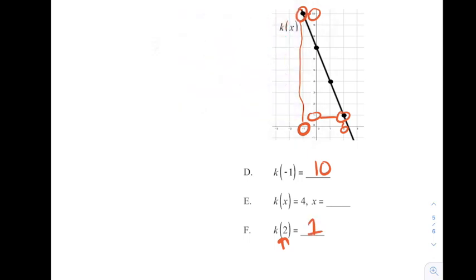Now part E looks a little different. Notice, x is the input, so we don't know what it is. And outside of parentheses, we see 4. Outside of parentheses would be the output. So we want a y of 4, and we want to see what point has that. That would be this point, who has an input of 1. So if the output is 4, then x, the input, is 1.